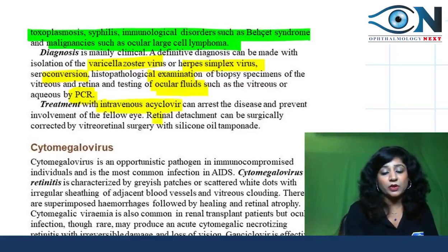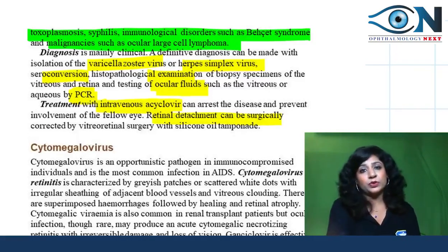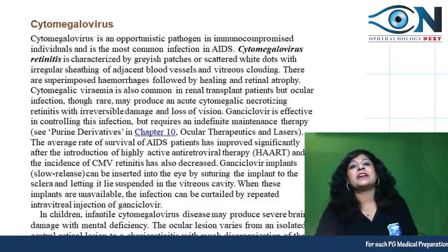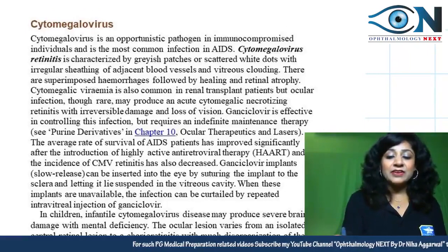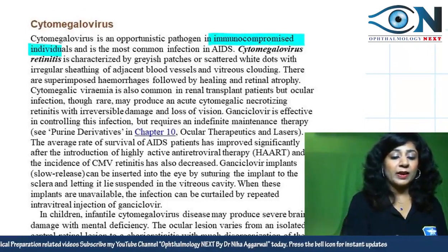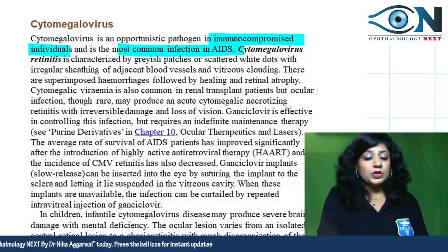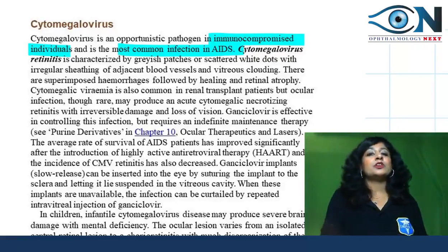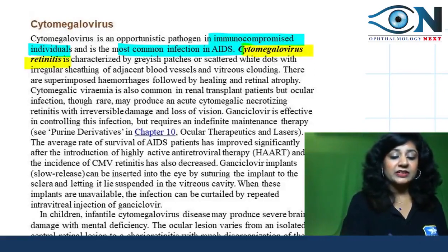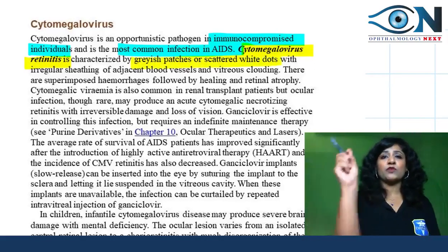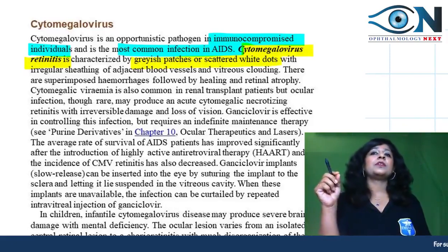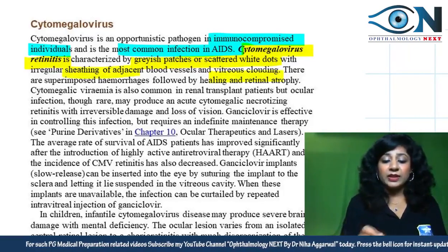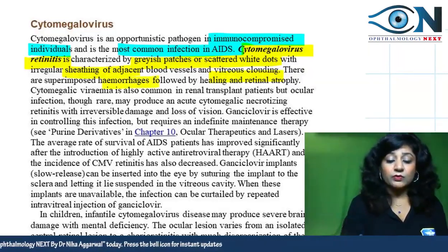CMV retinitis occurs in immunocompromised patients and is the most common opportunistic infection of the eye in HIV/AIDS patients. It is characterized by grayish patches or multiple white dots, irregular sheathing, vitreous clouding, hemorrhages, and eventually atrophy. It can also occur in renal transplant patients and produces acute cytomegalic necrotizing retinitis with irreversible damage and loss of vision.